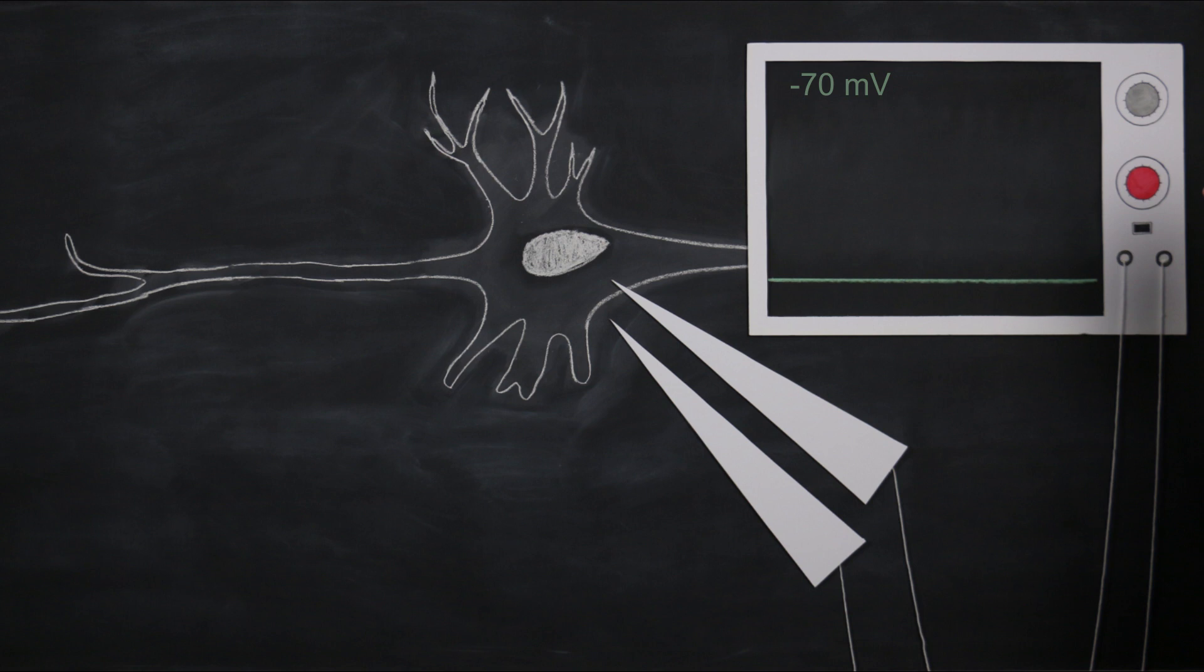This steady membrane potential of about negative 70 millivolts is called the neuron's resting membrane potential. In this resting state, with the negative 70 millivolt charge built up across its membrane, the neuron is said to be polarized. The negative sign on the voltmeter indicates that there are more negative charges inside the neuron than outside the neuron.